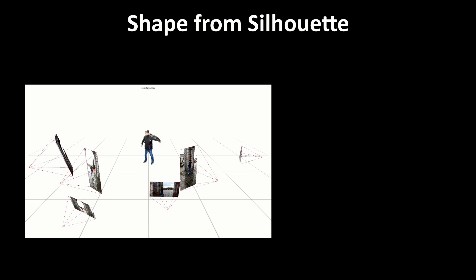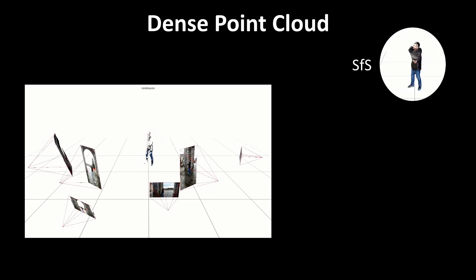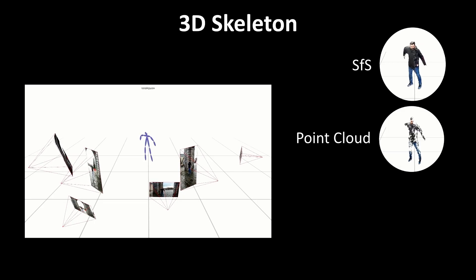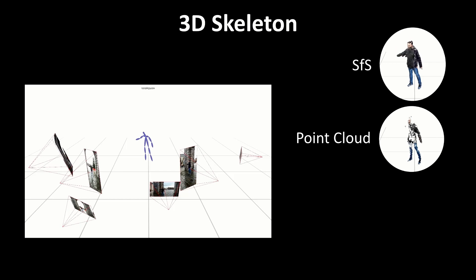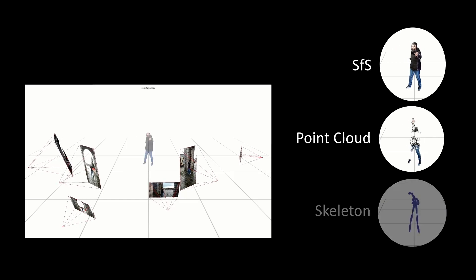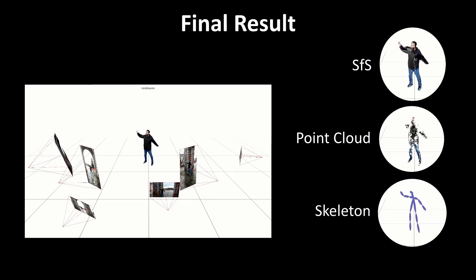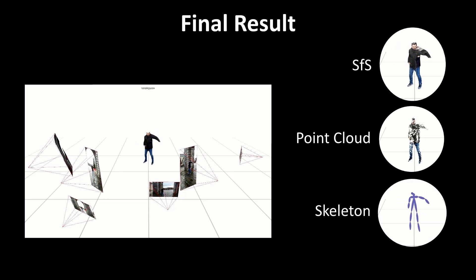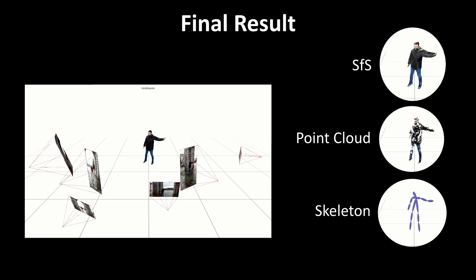Our system uses a multi-source shape from silhouette, dense point-cloud estimation through an enhanced multi-view stereo system, and the computation of the 3D skeleton of the performer to generate accurate 3D reconstructions of both the dynamic foreground and the static background.